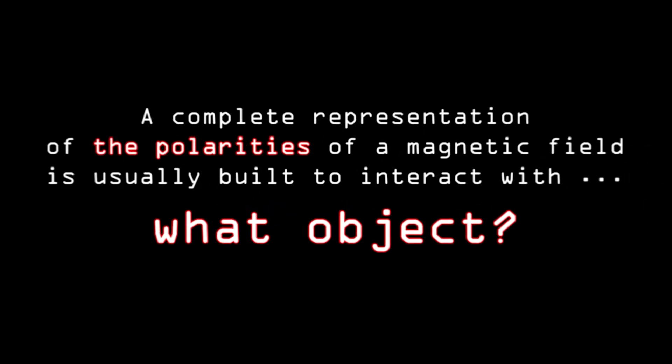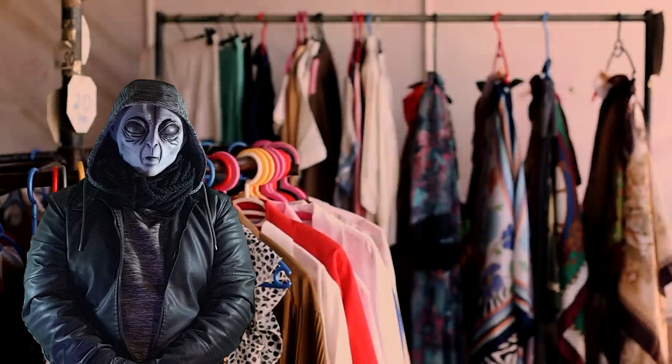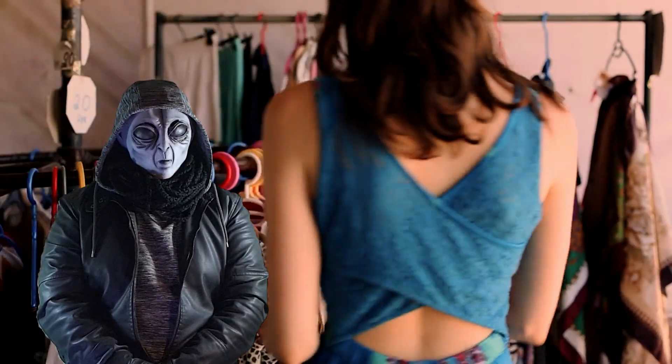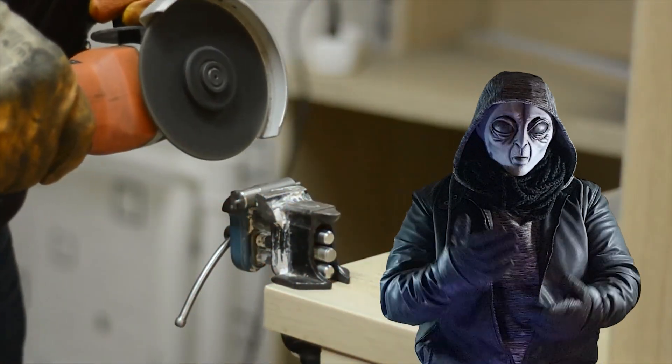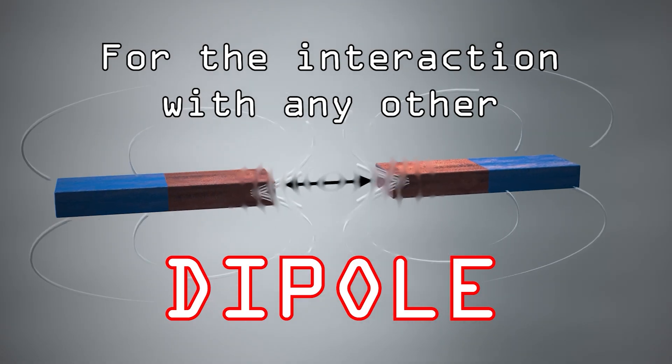And let me quote, a complete representation of the polarities of a magnetic field is usually built to interact with what object? Well, if we consider non-magnetic matter, which couldn't care less about polarity changes, we might say ferrous materials and similar. But logic demands the most accurate answer, for the interaction with any other dipole.